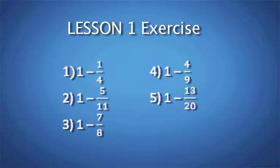Number one: one minus one quarter. Number two: one minus five over eleven. Number three: one minus seven over eight. Number four: one minus four over nine. And number five: one minus thirteen over twenty.